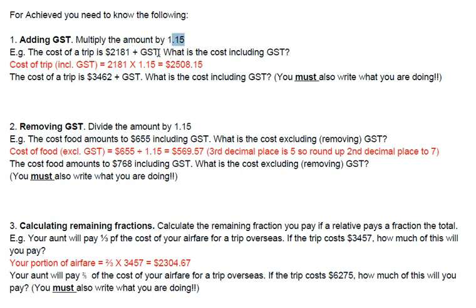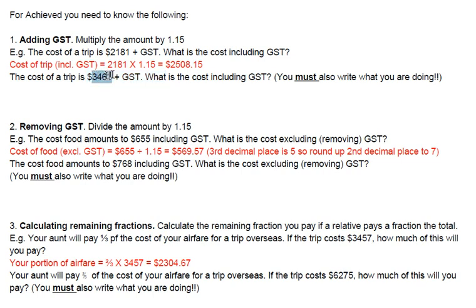If you don't fully understand that, just remember: multiply by 1.15. That's all you need to do. Take the value without the GST, hit times on the calculator, then 1.15, and out comes the result that includes GST. So use this value here and multiply it by 1.15.